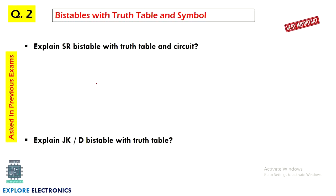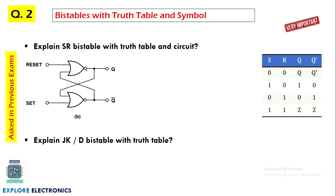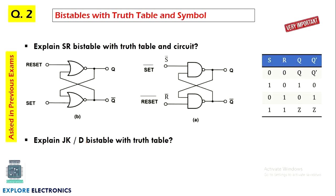Next topic is bistables with truth table and symbol. Explain SR bistable with truth table and circuit, and similarly explain JK and D bistables with truth tables. SR and JK bistables are asked many times in many subjects and also in examinations, so these two are very important. We need to understand the invalid state when 1-1 is the input in SR, and in JK bistable the output will toggle when input is 1-1. In D bistable there is a single input: when D equals 0, Q equals 0; when D equals 1, Q equals 1. This is very simple.